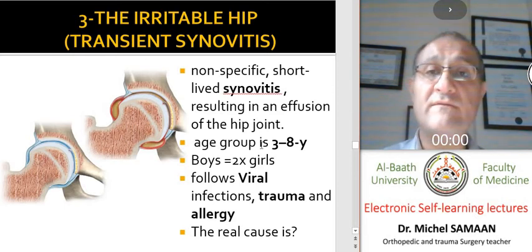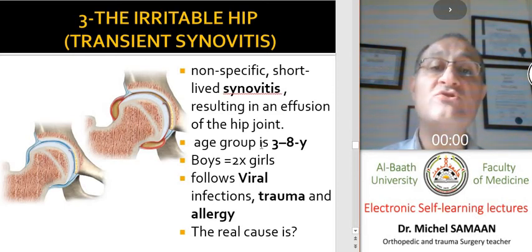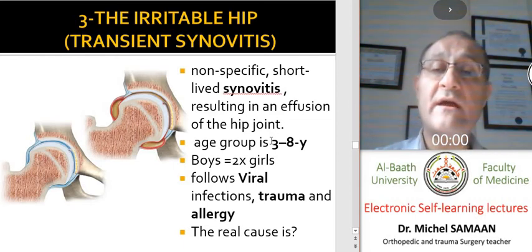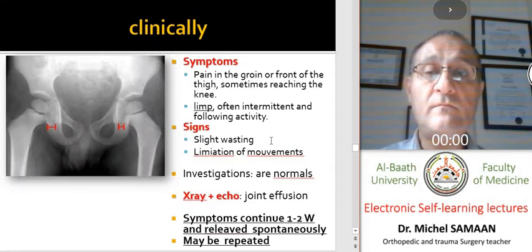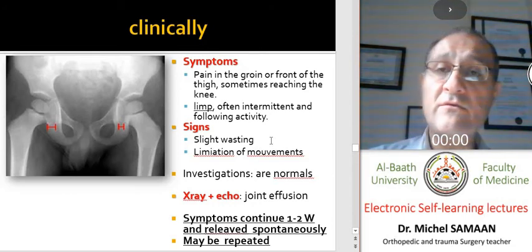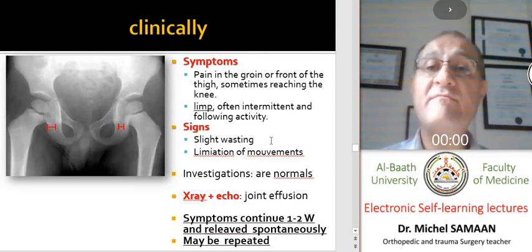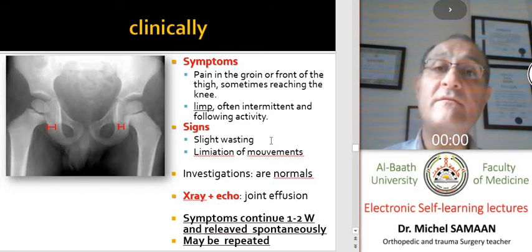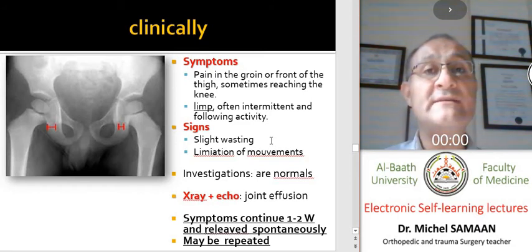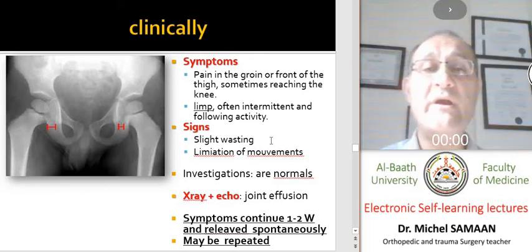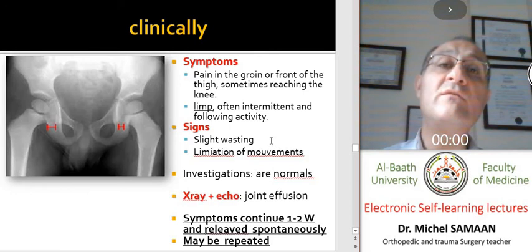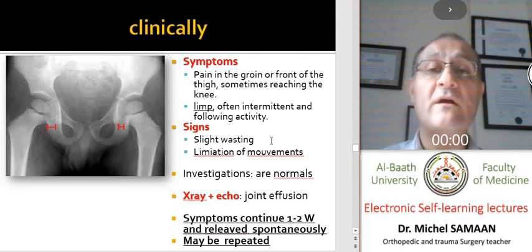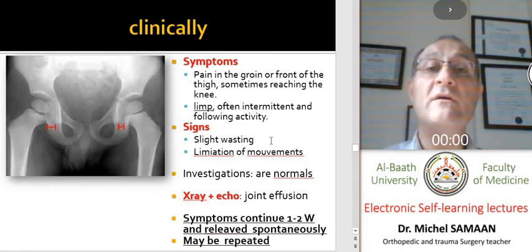The age group affected is between three and eight years old. Usually children have pain in the groin and limb, and even pain in the knee. We should always examine the hip when a child has a painful knee. The child may have a limp, especially after activity.